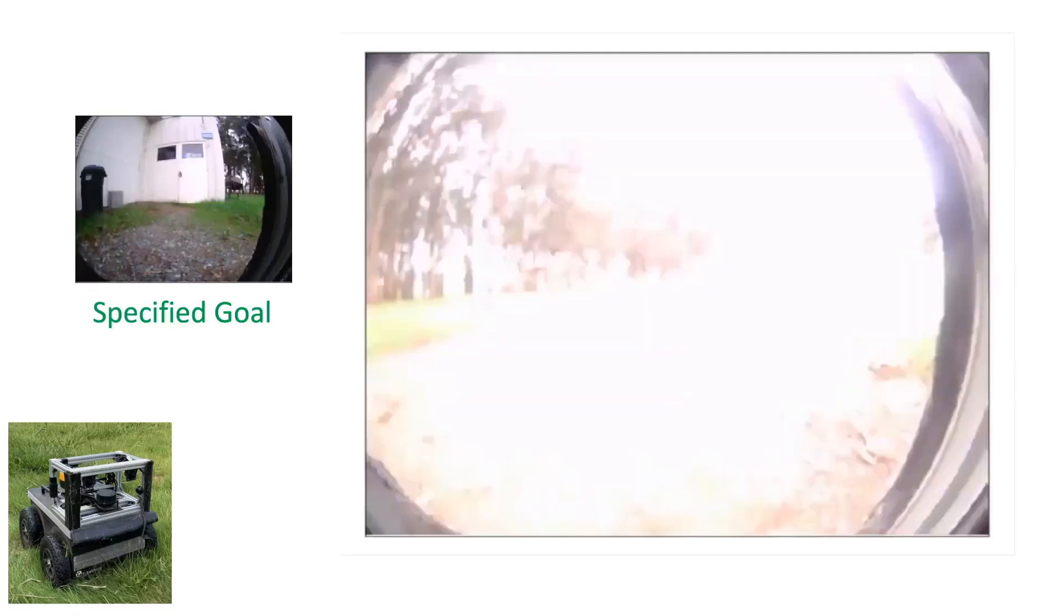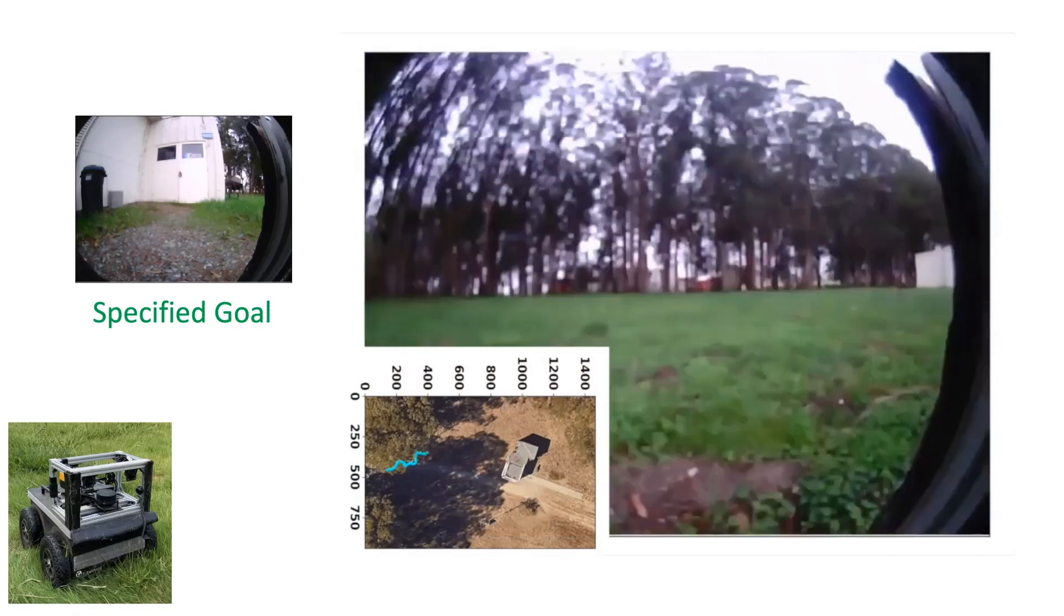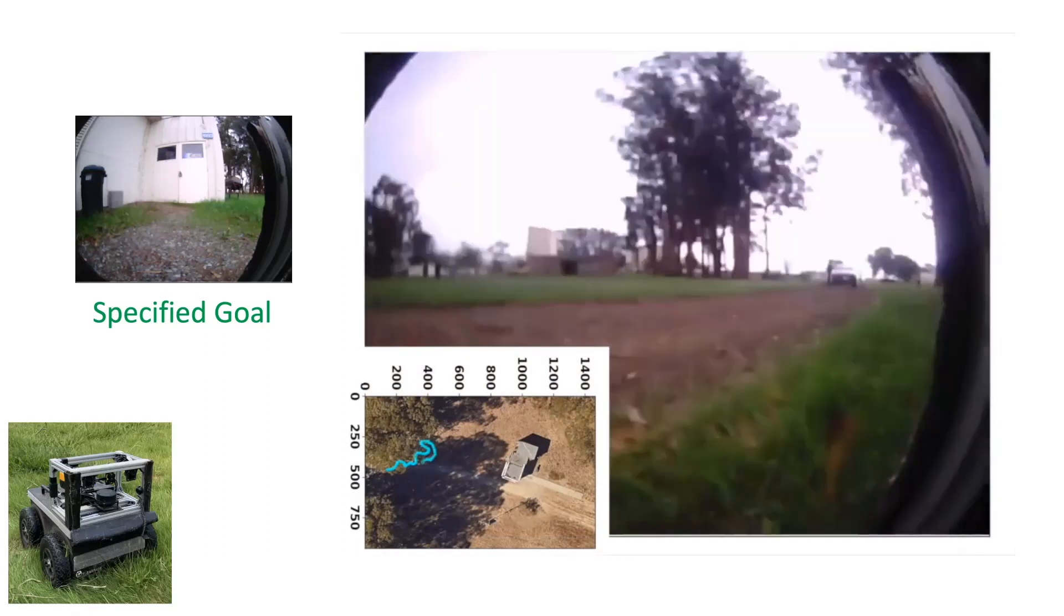Consider the problem of goal-directed exploration with a ground robot, which requires rapidly exploring open-world environments to find a user-specified goal. Given previous experience in navigating a wide variety of environments and a visually indicated goal of an unknown location, we would like to train a robot to rapidly explore a new environment and discover the goal.